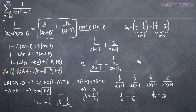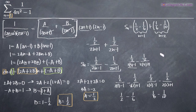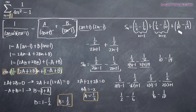Let's do one more. Plugging in n equals 3: we get 1 half over (2 times 3 minus 1) minus 1 half over (2 times 3 plus 1). The denominator on the left gives 6 minus 1 equals 5, so 1 half over 5 is 1 tenth. The denominator on the right gives 6 plus 1 equals 7, so 1 half over 7 is 1 fourteenth. For n equals 3, we get 1 tenth minus 1 fourteenth.